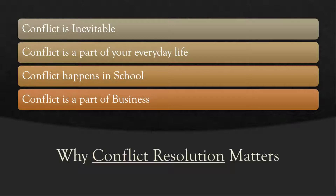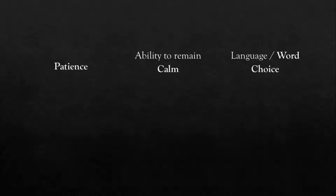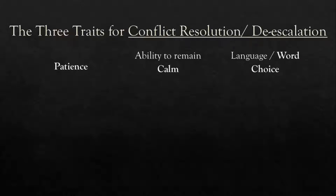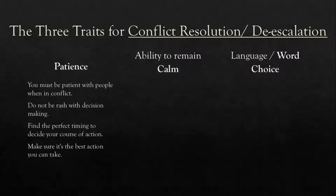Now I'm going to get into what I call the three traits slide. We have patience, ability to remain calm, and language and word choice — these are the three traits for conflict resolution and de-escalation. I'll start with patience. Patience is very rewarding in conflict. By carefully choosing when to speak or act, you gain an advantage over the other party. I often try very hard to be more patient in conflict, especially when dealing with those who aren't acting very rationally — such as those in a crisis or not in a rational mental state.